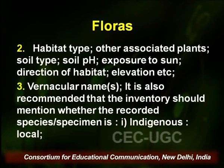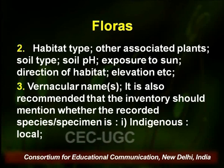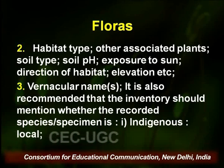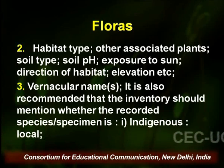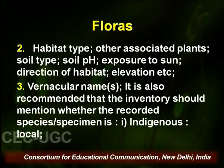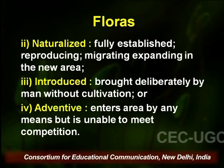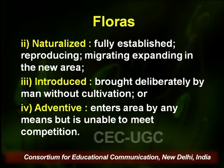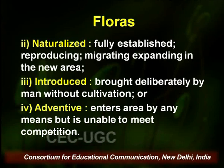They also record habitat type, other associated plants, soil type, soil pH, exposure to sun, direction of habitat, and elevation. Vernacular names are also taken into record. It is recommended that the inventory should mention whether the recorded specimens or species are indigenous (i.e., local), naturalized (i.e., fully established in the area and reproducing), migrating or expanding into a new area, introduced (brought deliberately by man without cultivation and then introduced in a new area), or adventive (i.e., they entered an area by some means but are unable to meet competition). All these are recorded while making up a flora.